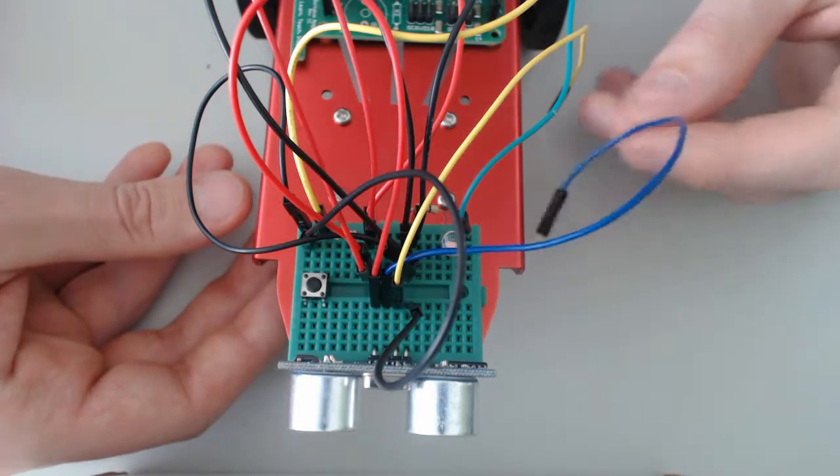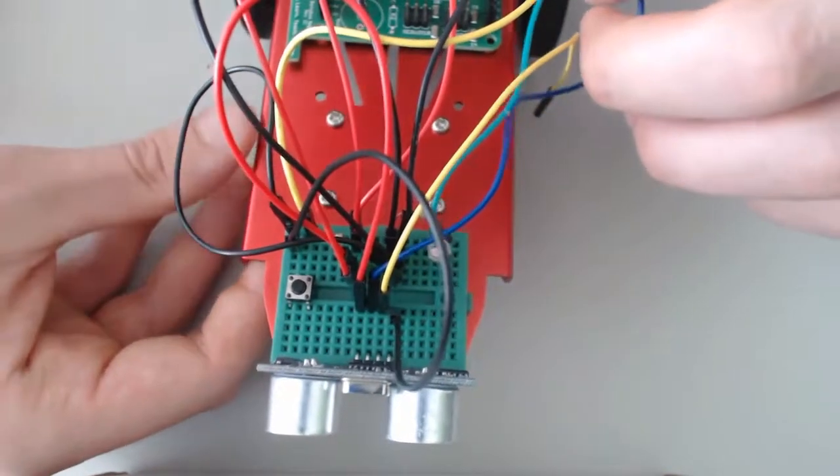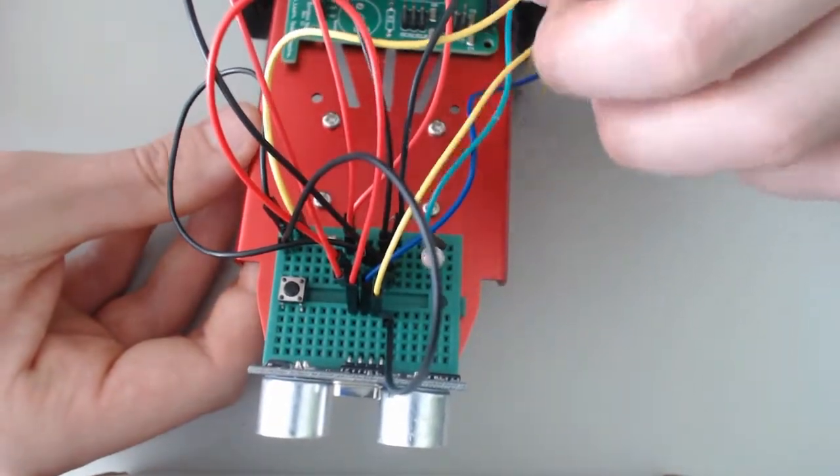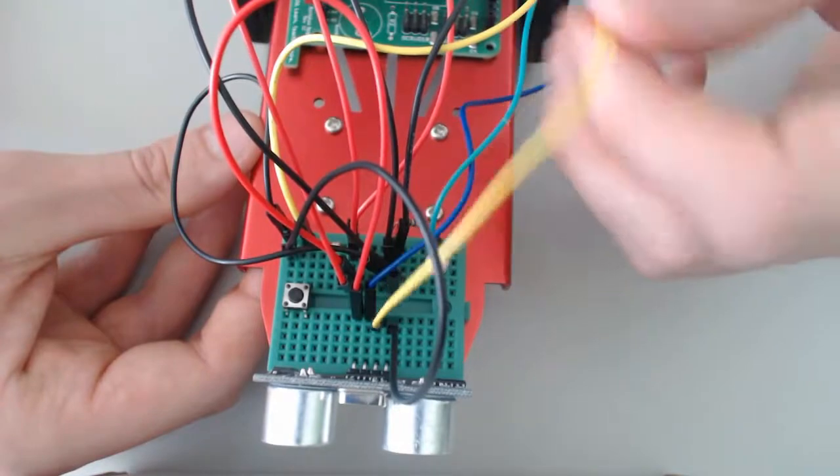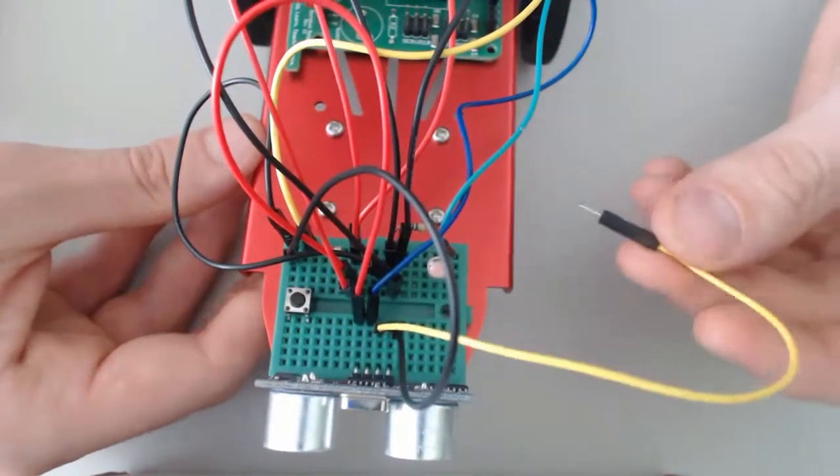Now my blue wire, which represents trigger, I want to place on pin 3 to stay consistent with our curriculum. So we have trigger wired up to pin 3 on the Barnabas noggin.